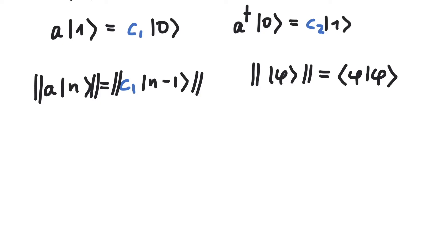On the left side, we perform a Hermitian conjugate and change the ket to a bra and also change a to a dagger. And then it's the same state again, a and n. On the right-hand side, we have the absolute value of c1 squared and our state n-1.